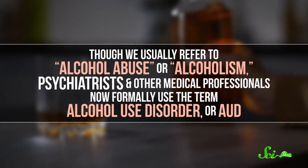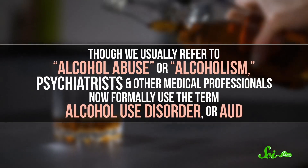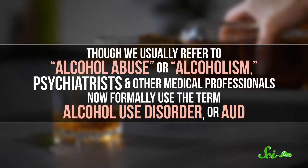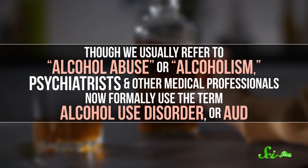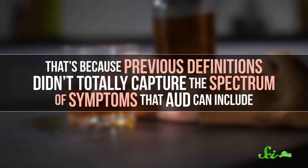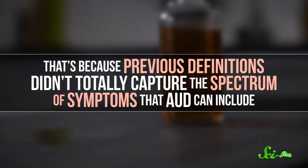Though we usually refer to alcohol abuse or alcoholism, psychiatrists and other medical professionals now formally use the term alcohol use disorder, or AUD. That's because previous definitions didn't totally capture the spectrum of symptoms that AUD can include. But also, the way we think about treatments doesn't always represent the full story. Here in the United States, common treatments include rehab and those anonymized 12-step group therapy programs, but those are far from the only treatments for alcohol use disorder, nor are they necessarily the most effective.